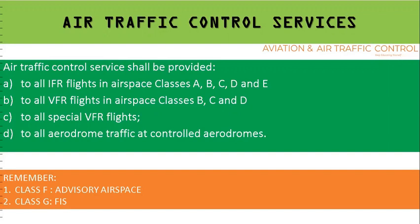Air traffic control service shall be provided to all IFR flights in airspace classes A, B, C, D, and E. Class F is advisory airspace, and class G is flight information service airspace. ATC services shall also be provided to all VFR flights operating within classes B, C, and D. In class A airspace, VFR flights are not permitted.